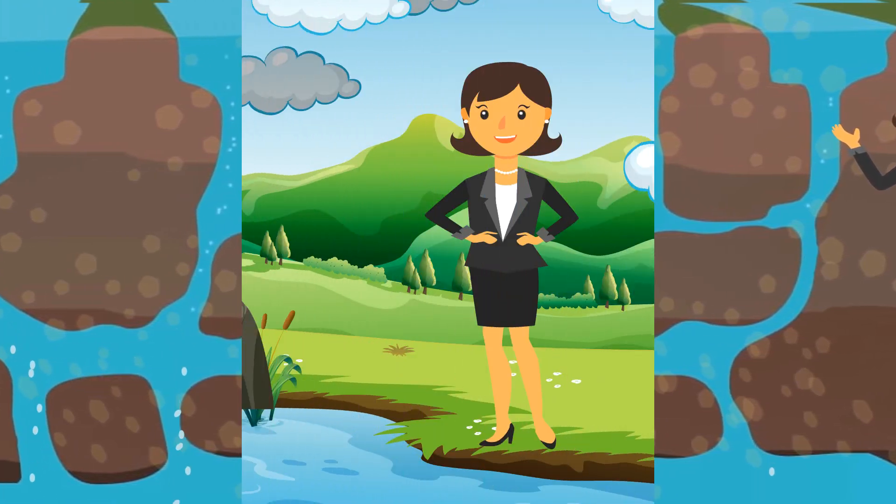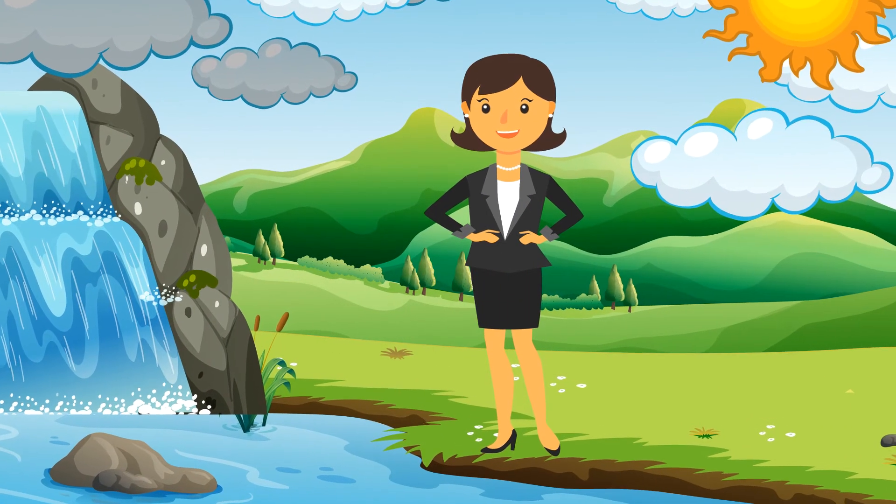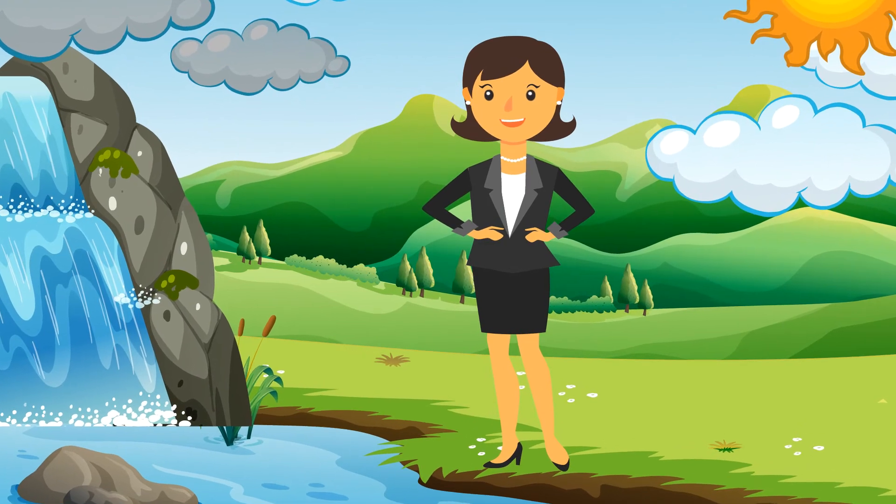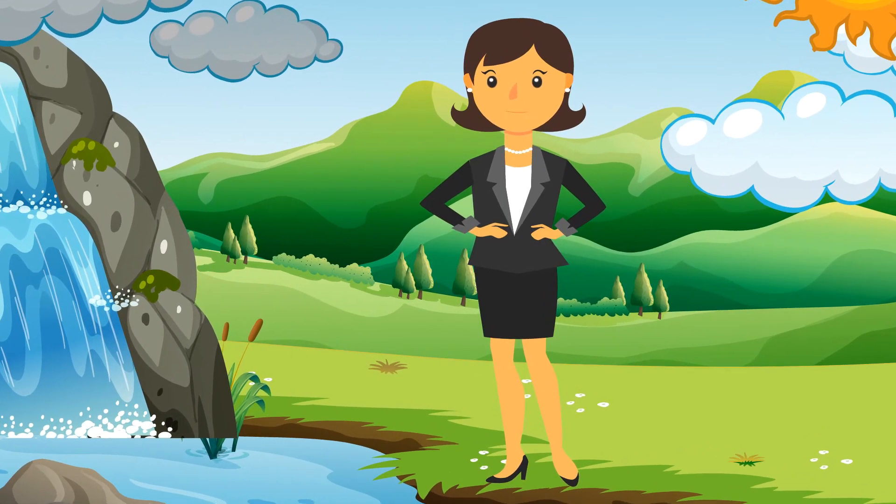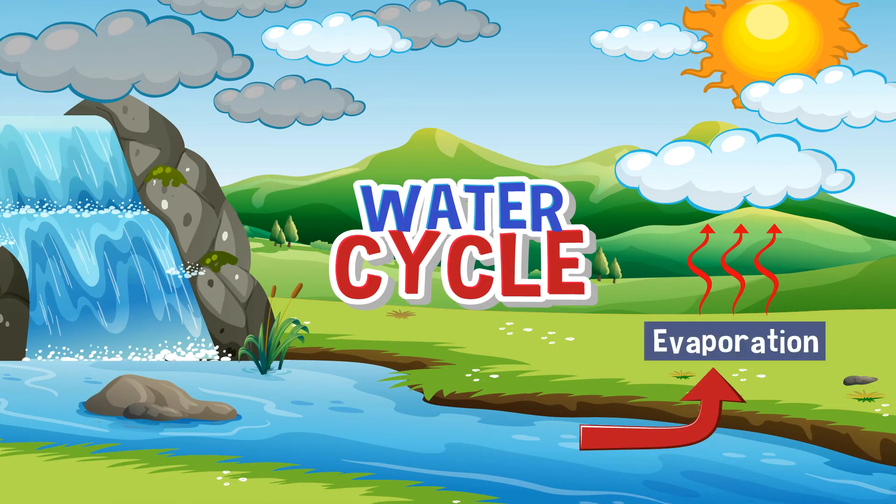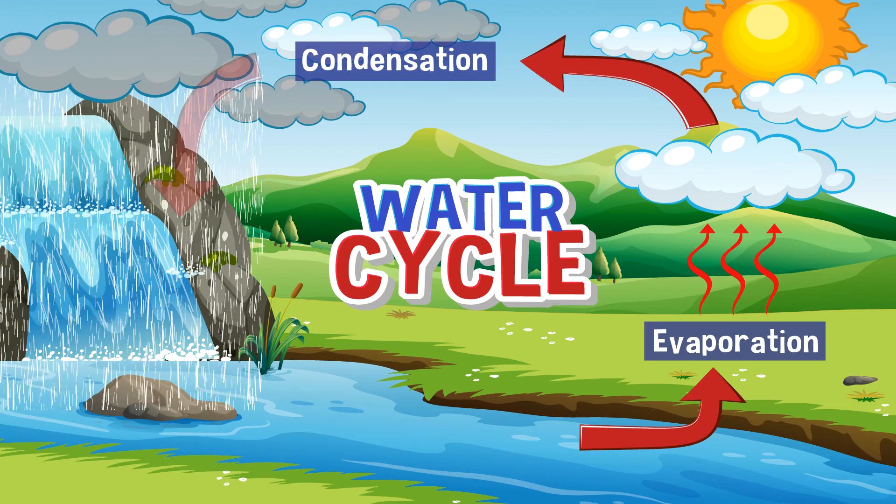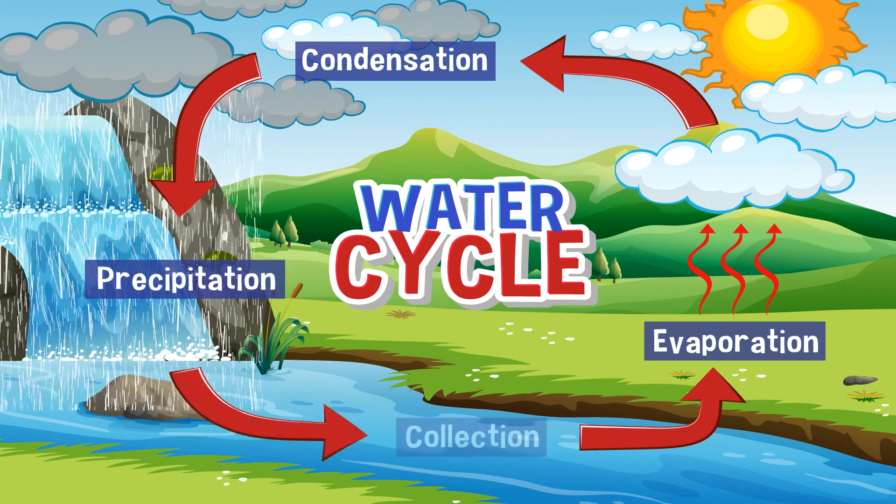Thus, the water cycle is a continuous process of evaporation, condensation, precipitation, and collection.